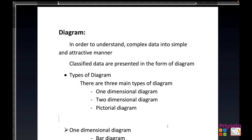Chapter 2, here we are going to start Exercise 2.3. Before we start with the exercise, let's understand why we are doing it. A diagram is used to understand complex data in a simple and attractive manner, which is going to be drawn in Exercise 2.3. Classified data are presented in the form of diagrams. We can see the types of diagrams: one dimension, two dimension, and pictorial diagram.